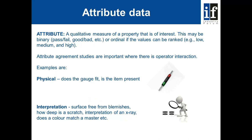Another type of data that we need to manage when we make measurements is attribute data. Attribute data is a qualitative measure of a property that is of interest. That may be binary — so simply pass or fail, good or bad — or ordinal, if the values can be ranked, for instance low, medium, and high.